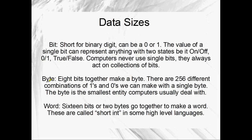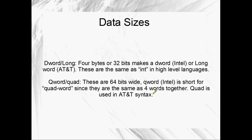Then we've got a word, which is two bytes together, one after another, or 16 bits together. That's called a short int in C++. Then we've got a d-word, which is four bytes together, or 32 bits. That's called a d-word in Intel, or a long word in AT&T syntax, and these are the same as int in high-level language. Then we've got q-word, or quad-word, and these are 64 bits wide - eight bytes all in a line. You can make really massive numbers with q-words if you want to do maths on really large integers.